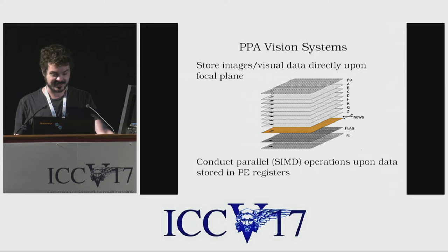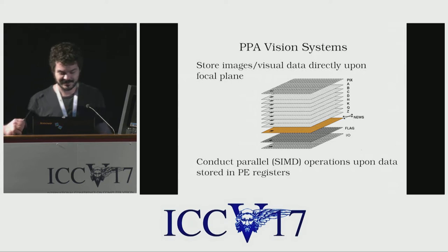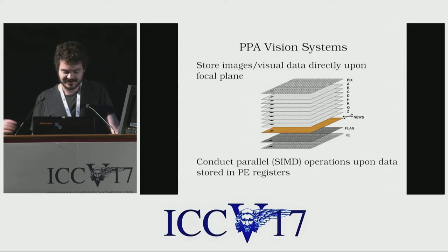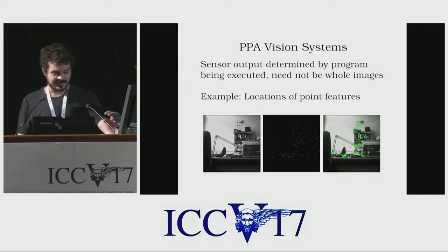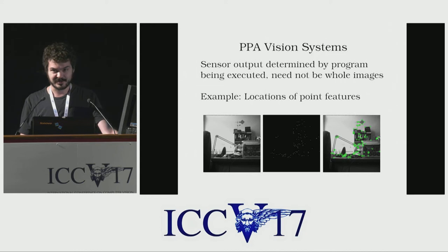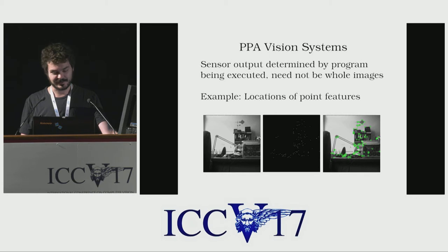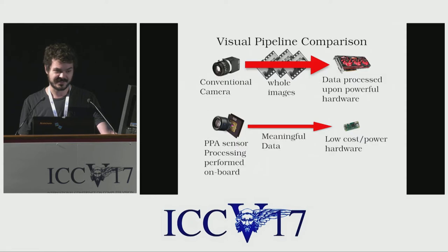This architecture allows whole images and other visual data to be stored and efficiently processed directly on the sensor's image plane. Additionally, the sensor's output per frame is determined by the program being executed on it, so your output can range from entire images to only a few bits of data. For example, you can perform point feature extraction and then only output the XY locations of the features detected.